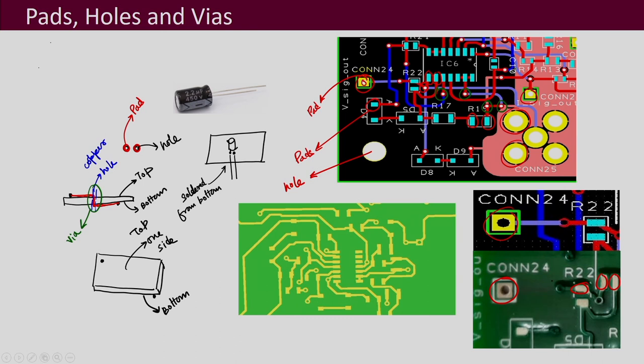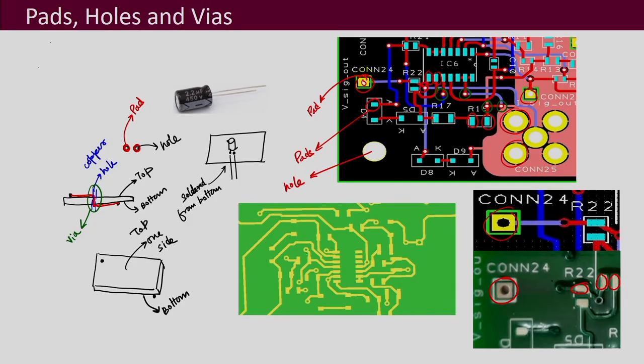These are pictures of vias in a PCB layout — the tracks travel from one layer to another layer through a hole with copper filling. Pads, holes, vias, and traces or tracks are some of the very common terms used while discussing PCBs.